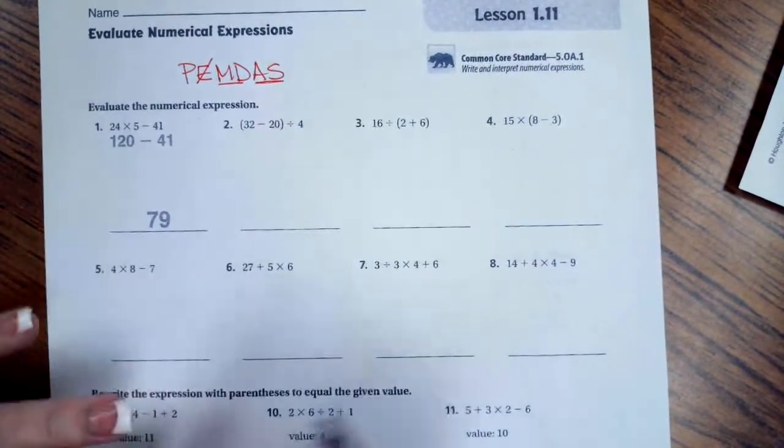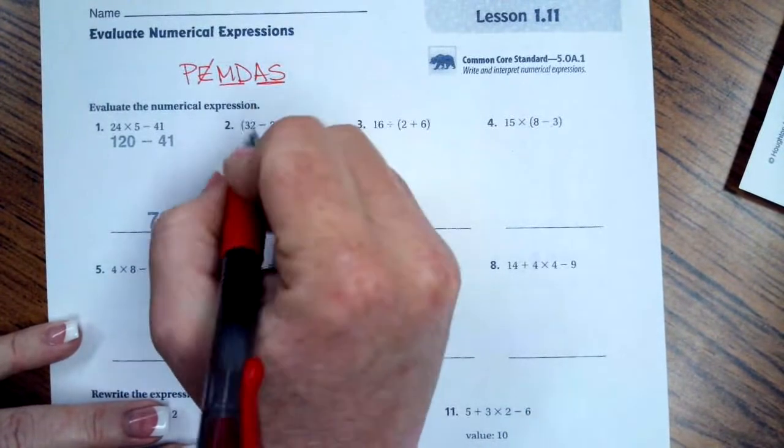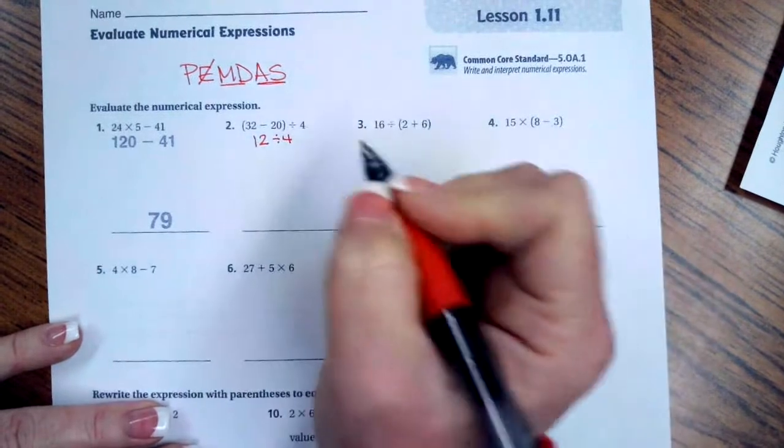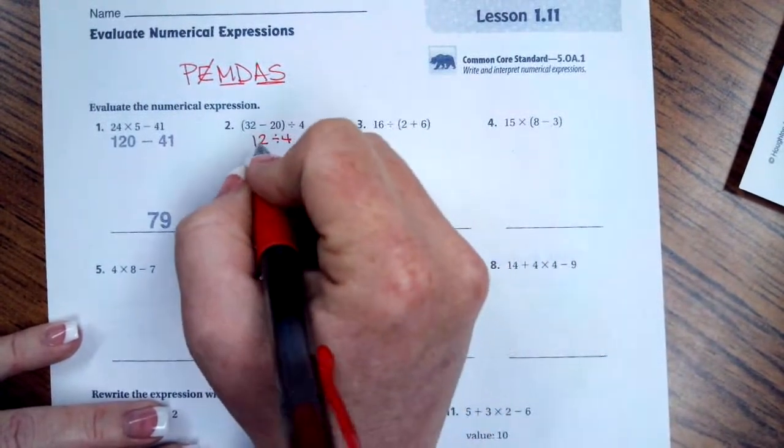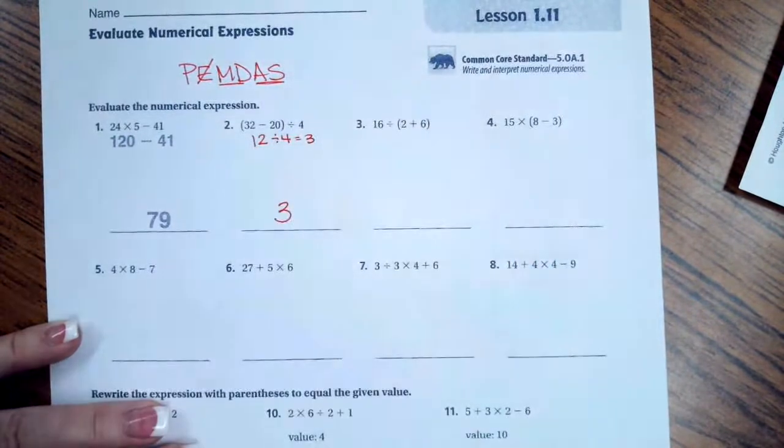But the very first thing that we have to do is worry about parentheses. So 32 minus 20, that leaves me with 12. You still have to divide by the 4. 4 goes into 12 three times.